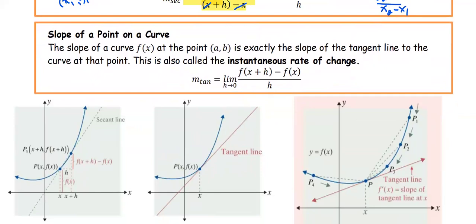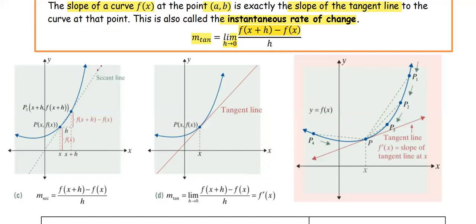The slope of a curve f(x) at the point (a, b) is exactly the slope of the tangent line to the curve at that point, and this is also called the instantaneous rate of change. The slope of the tangent line, represented by m tangent, is the limit of the difference quotient — the limit of f(x+h) minus f(x), all divided by h, as h approaches 0, where h represents the difference between the first x and the second x.